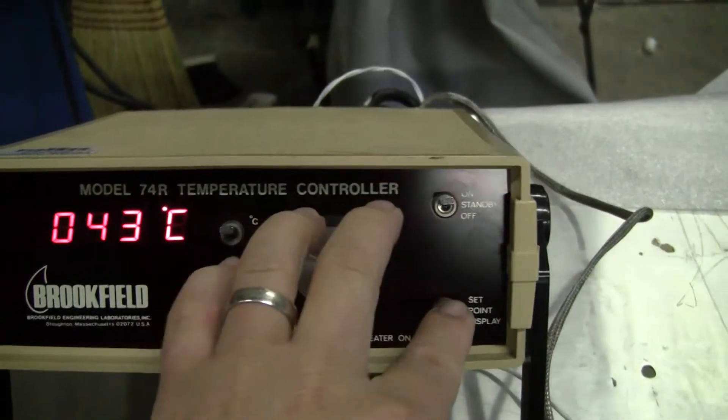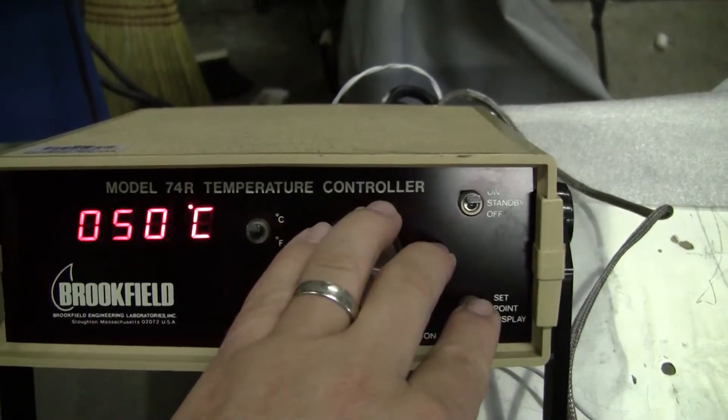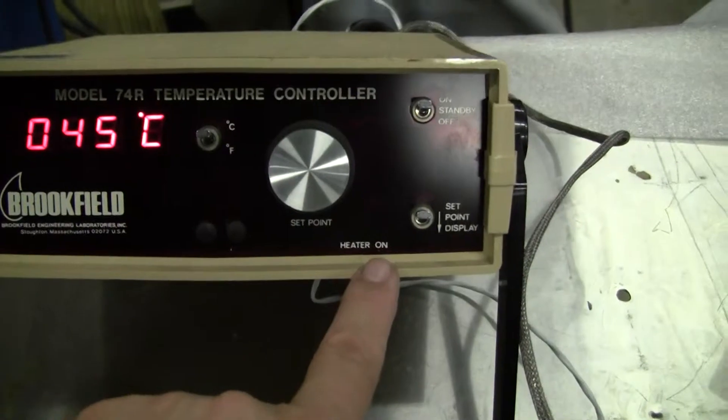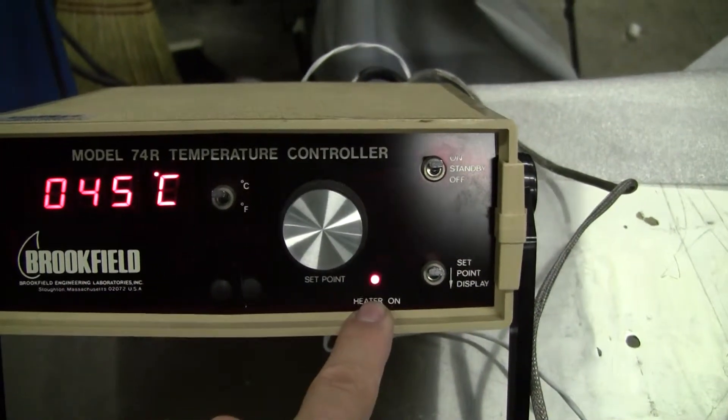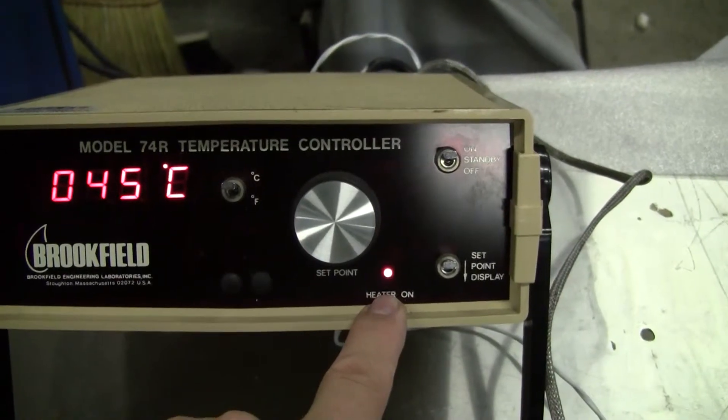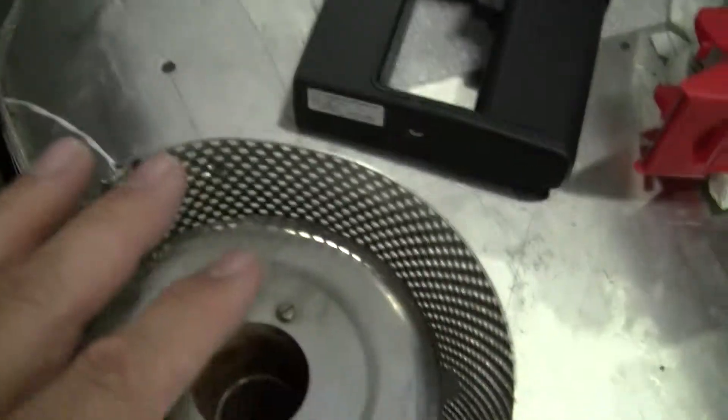But when I change the set point to a higher number, say 50, you'll see the red light after it goes through its process. You will see a red light come on indicating that it's throwing heat to the cylinder, or to the heater, excuse me.